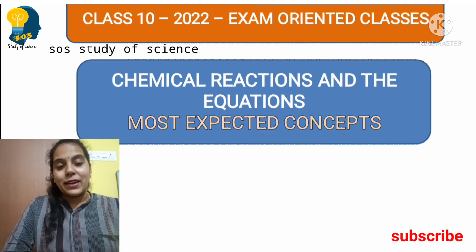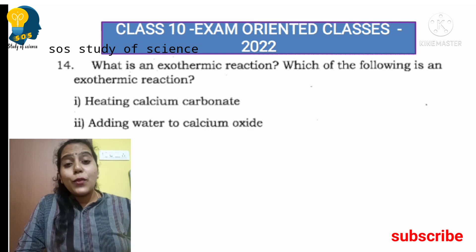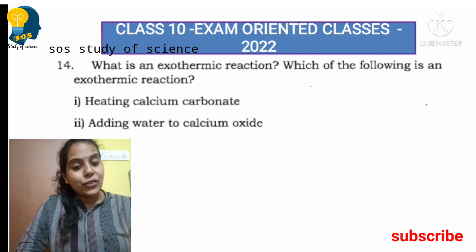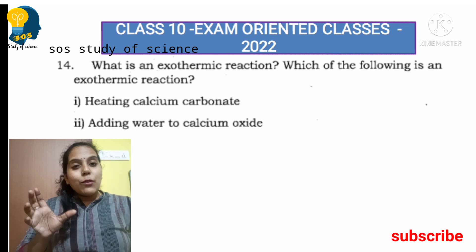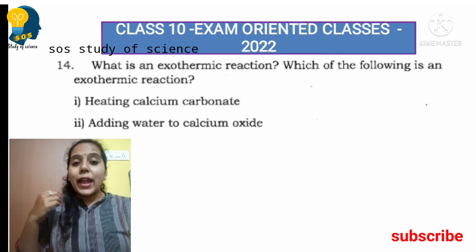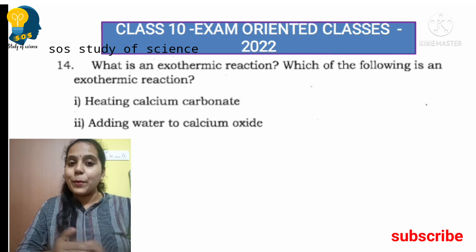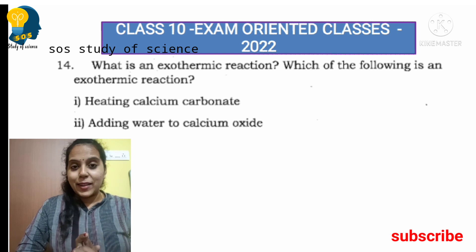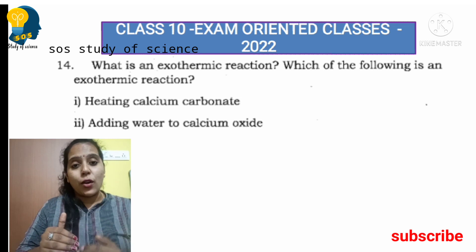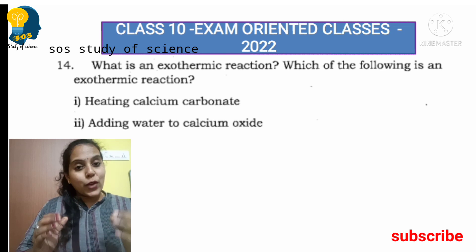So first question: What is an exothermic reaction? Which of the following is an exothermic reaction — heating calcium carbonate, or adding water to calcium oxide? An exothermic reaction is a chemical reaction where heat is evolved or liberated. Very simple — one mark easily obtained. For endothermic, it is a reaction where heat is absorbed.